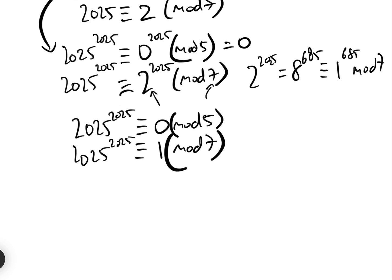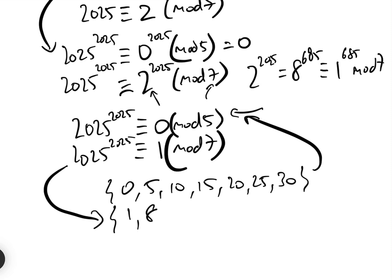Now that means that what we actually want is, what is it mod 35? Well, if it's 0 mod 5, that means the remainder, when we divide by 35, will either be 0, 5, 10, 15, 20, 25, or 30. That's from this one. And from this one, the remainder, when we divide by 35, will either be 1, 8, 15, 22, or 29. And the only one which is in both of those is 15. And so therefore, the remainder, when we divide by 35, is 15.